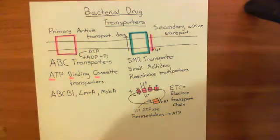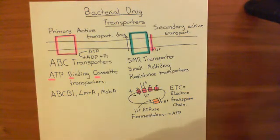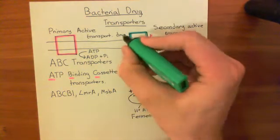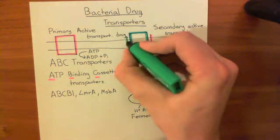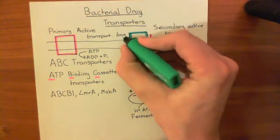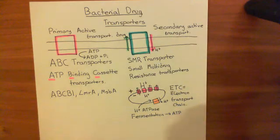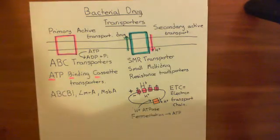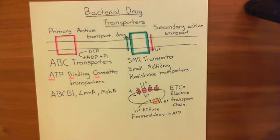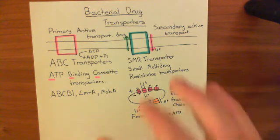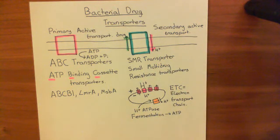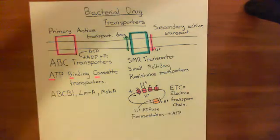That's how small multidrug resistance transporters — these SMRs — work. The other three families of bacterial drug transporters also work in this way by secondary active transport, and we'll see those in the next video.